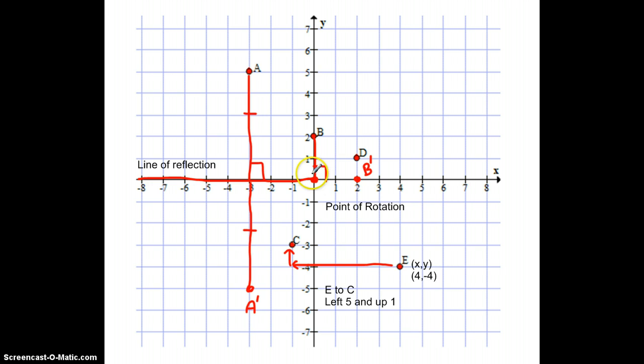So to recap, we look at the three transformations that we study in grade seven on the Cartesian plane, sometimes called the coordinate plane. We have a translation, which is simply moving to the left or to the right and up.